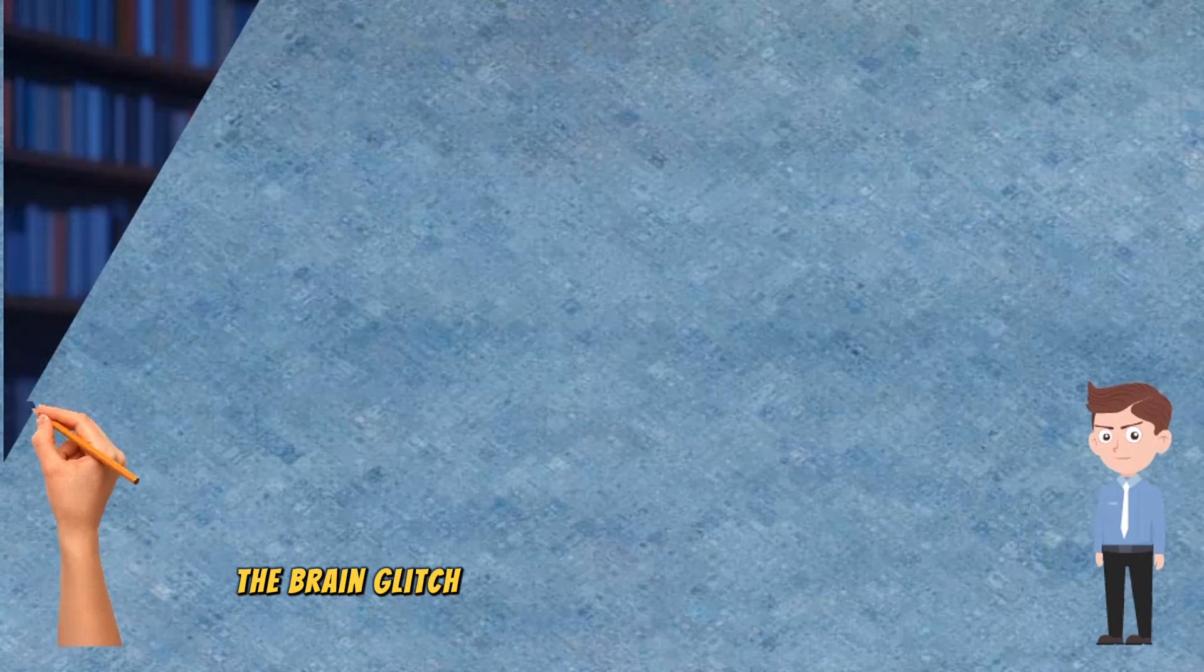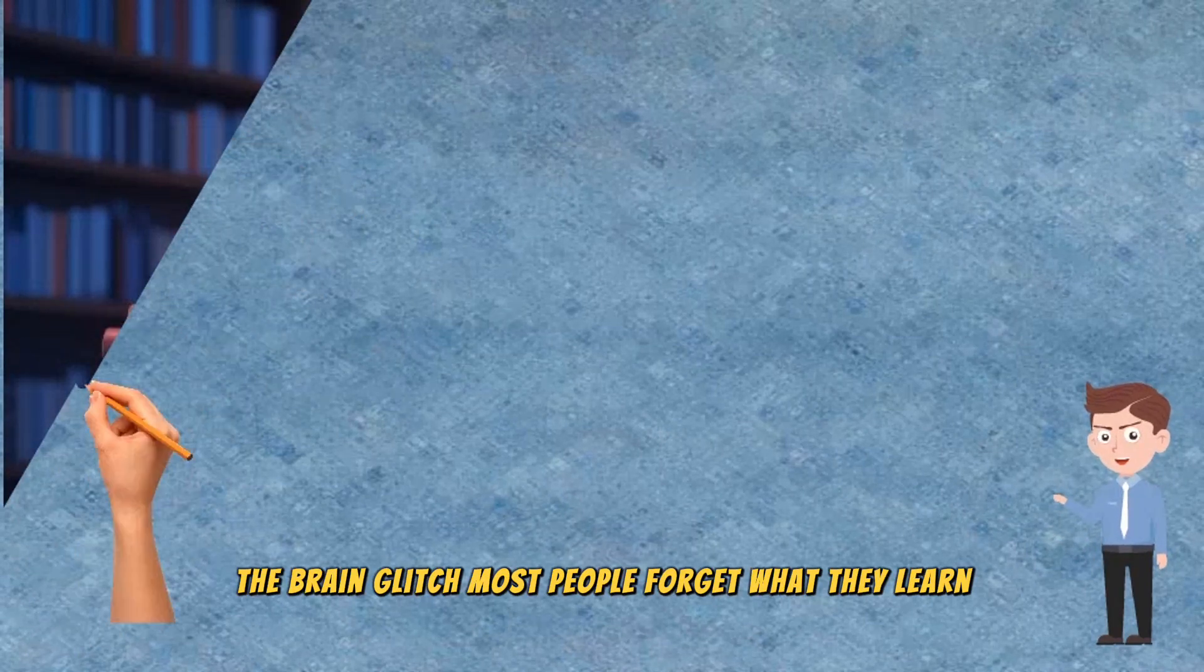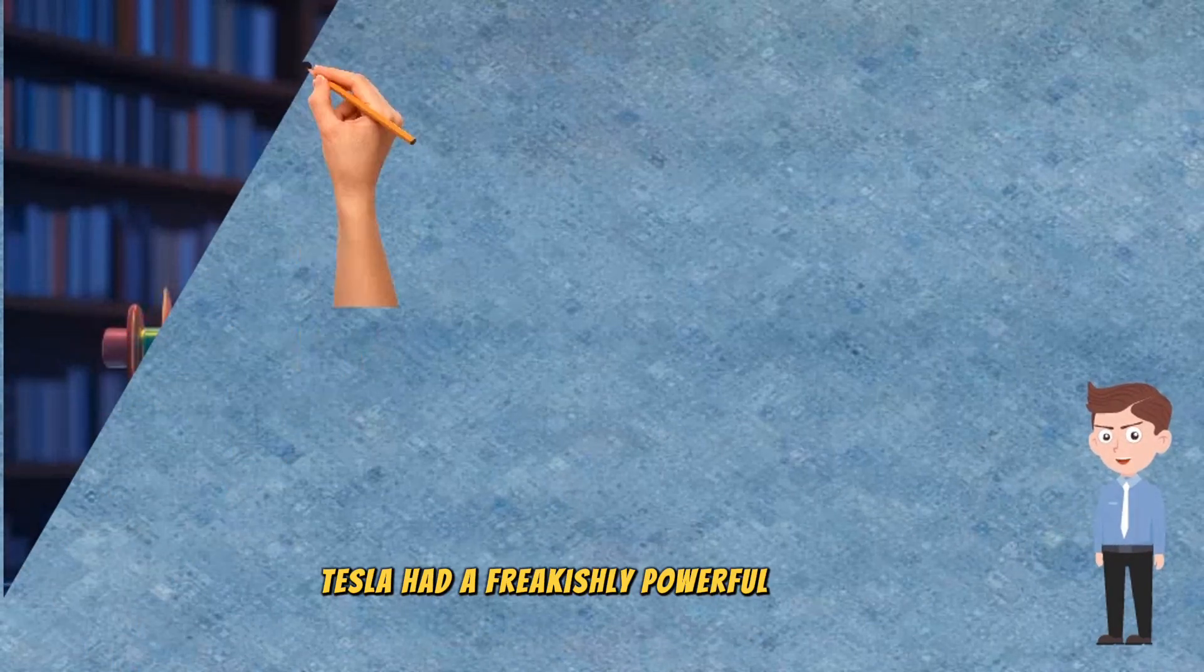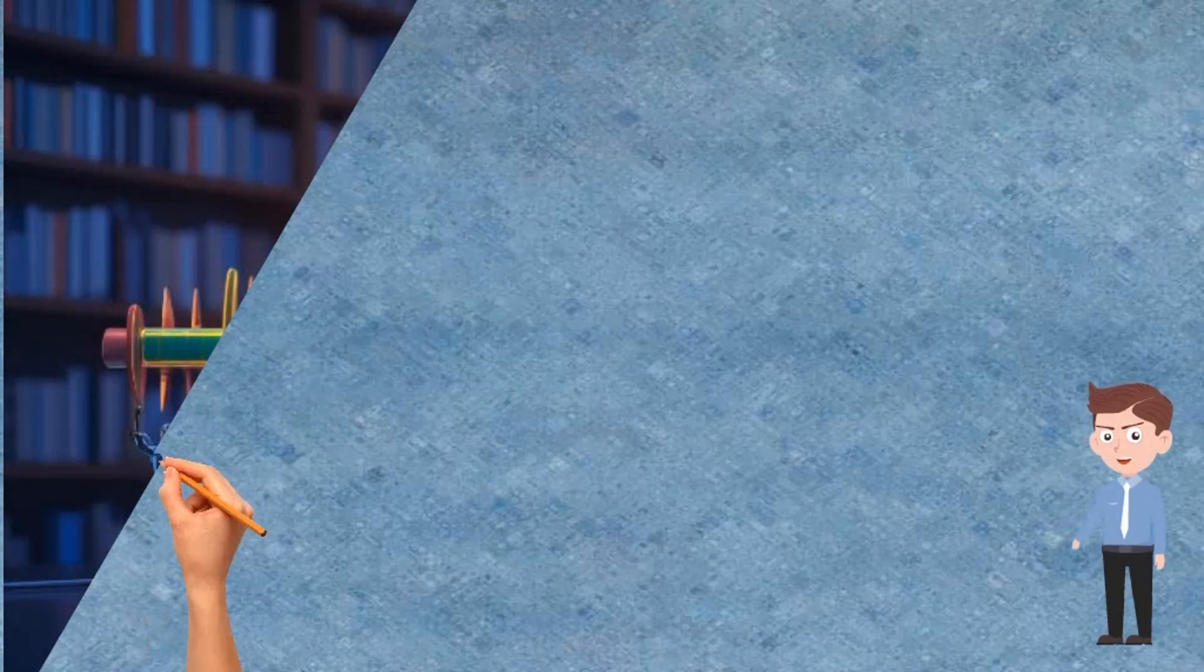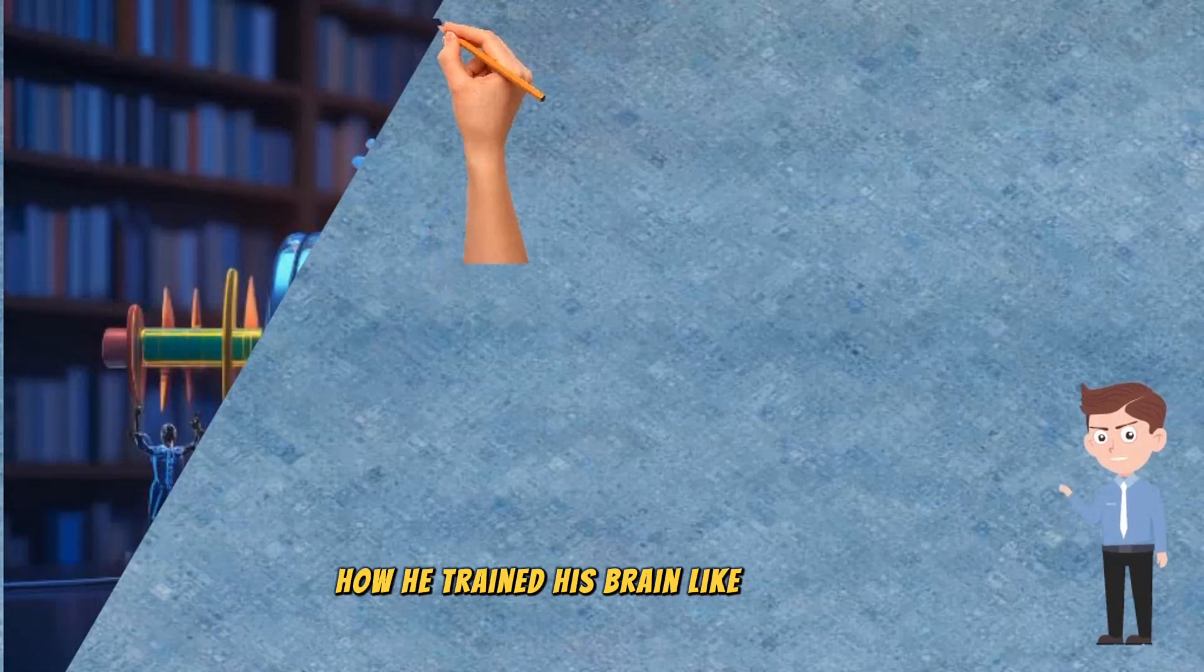The brain glitch. Most people forget what they learn. Tesla had a freakishly powerful memory. He could memorize entire books after just one read. How? He trained his brain like a muscle.